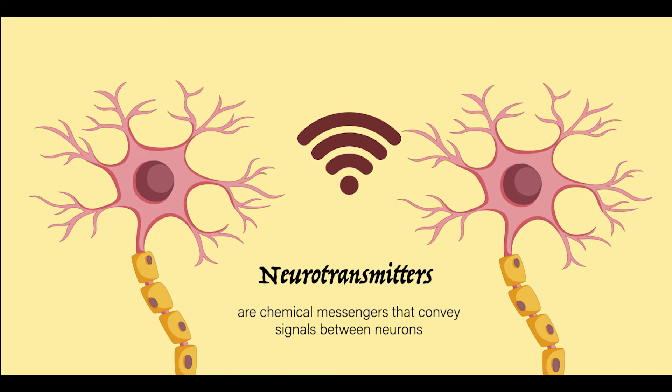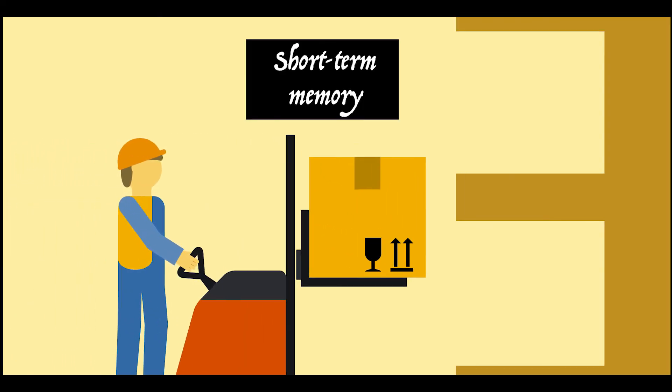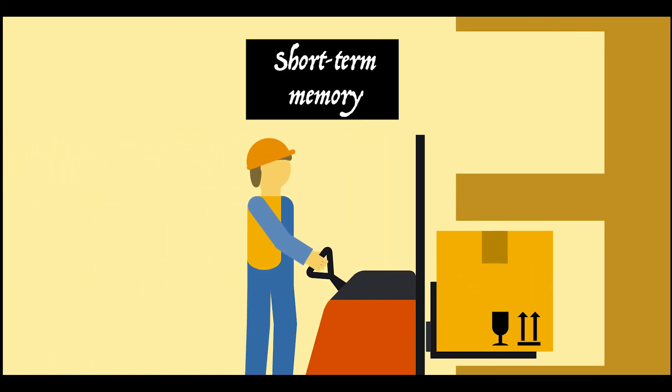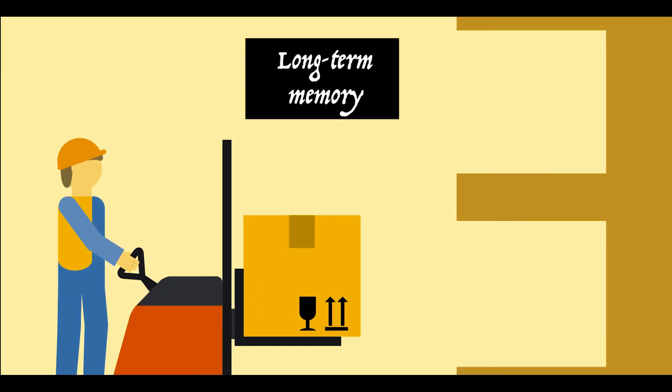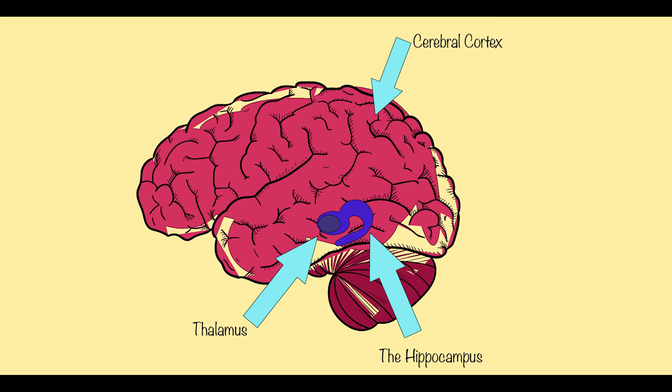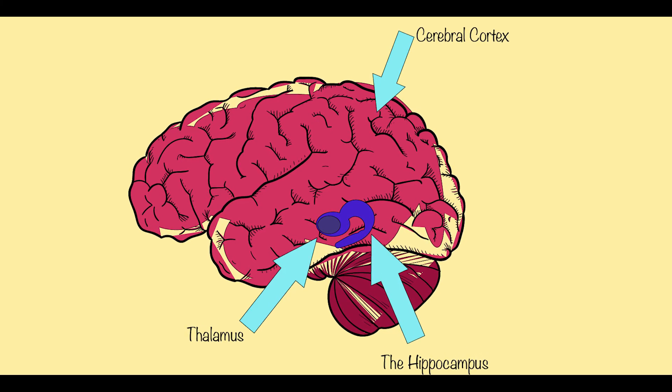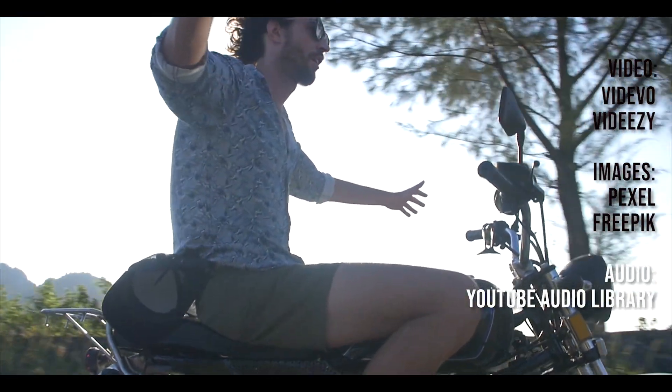Then, information first lands in short-term memory where it's available for a few seconds to a minute. It's then transferred to long-term memory through areas such as the hippocampus and finally to storage regions across the brain. And there you have it, the formation of memories.